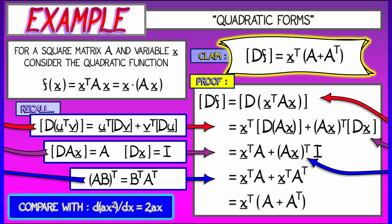But in this higher-dimensional case, where A is a matrix, then 2 times A really becomes A plus A transpose. Isn't it cool how that works?